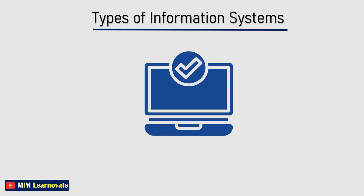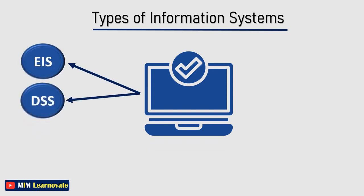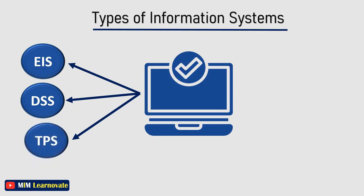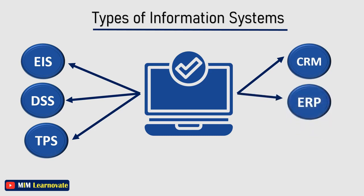We will now discuss the types of information systems. Major types include EIS (Executive Information System), DSS (Decision Support System), TPS (Transaction Processing System), CRM (Customer Relationship Management), ERP (Enterprise Resource Planning), and MIS (Management Information System). Let's study them in detail.